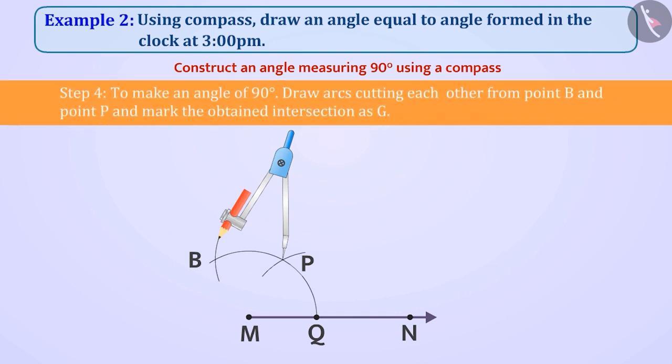Step 4. By keeping the same distance in the compass, we will now draw arcs cutting each other from B and P. The intersection point obtained will be named G.